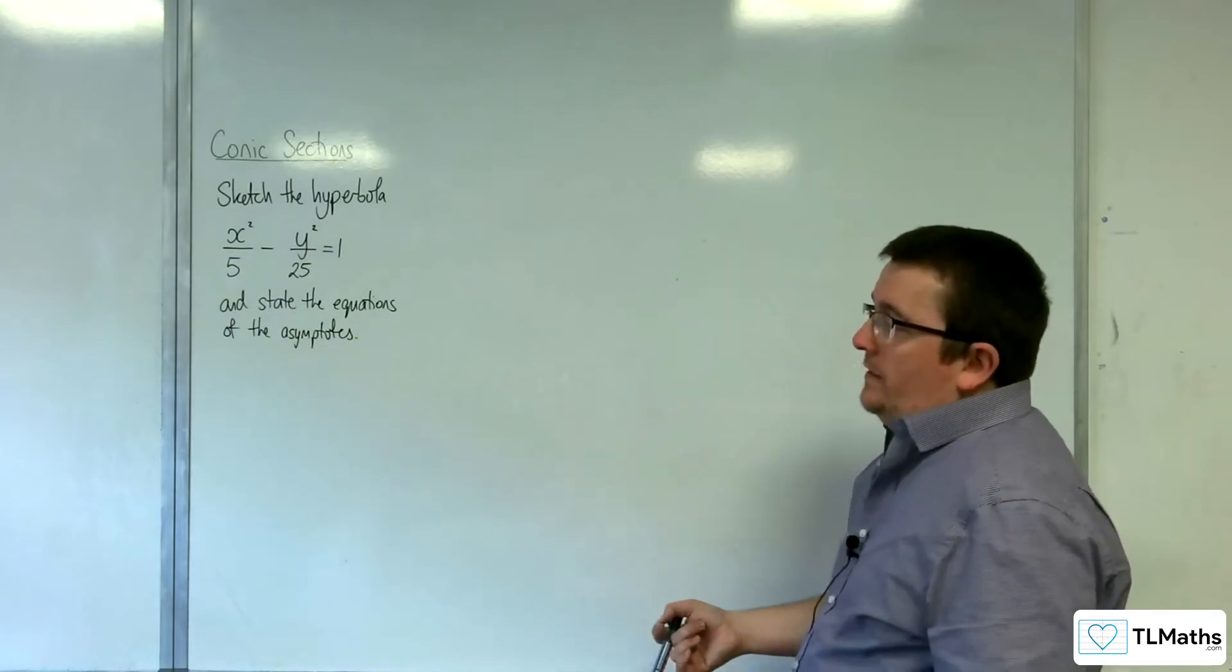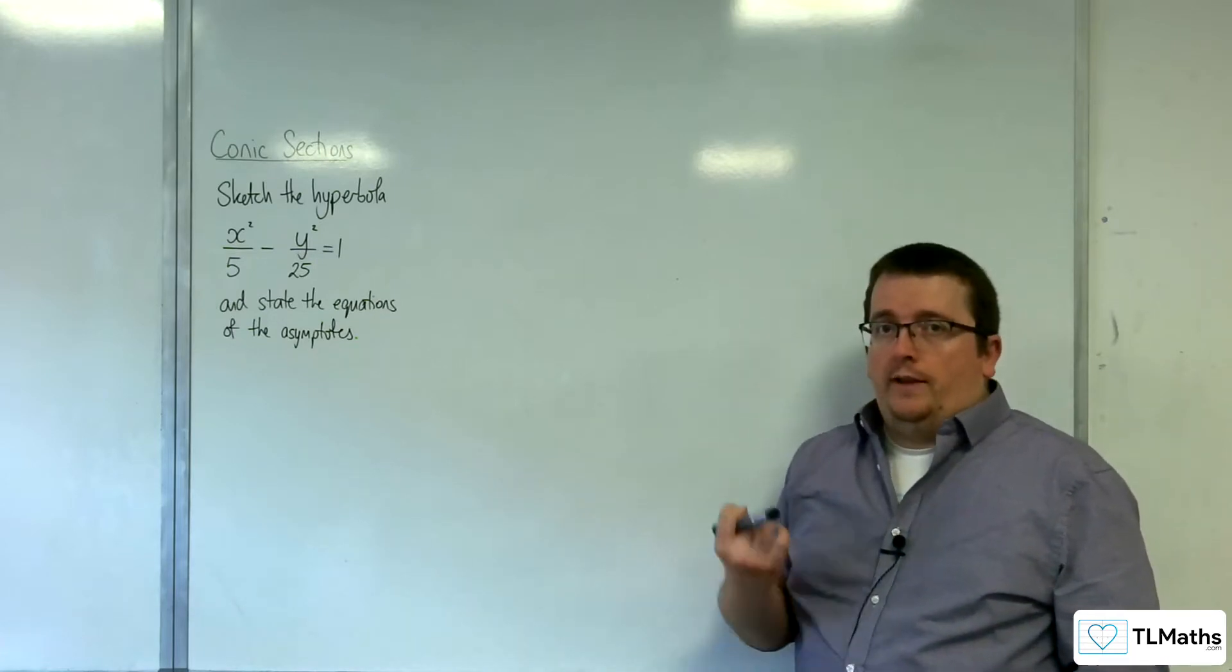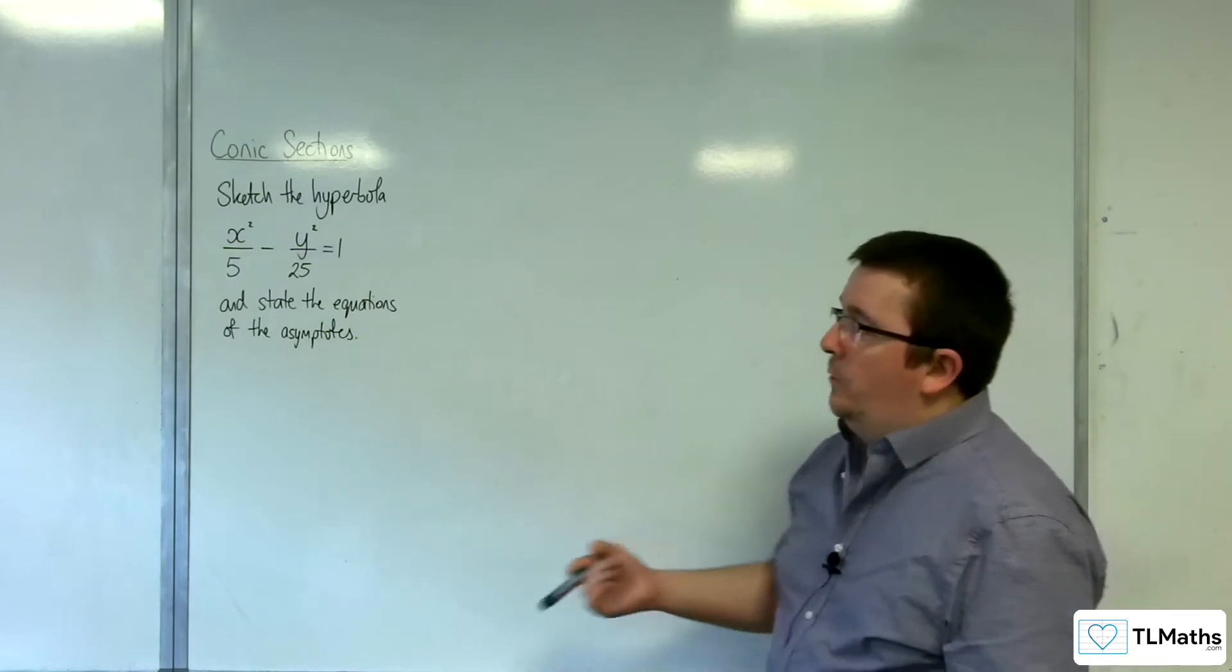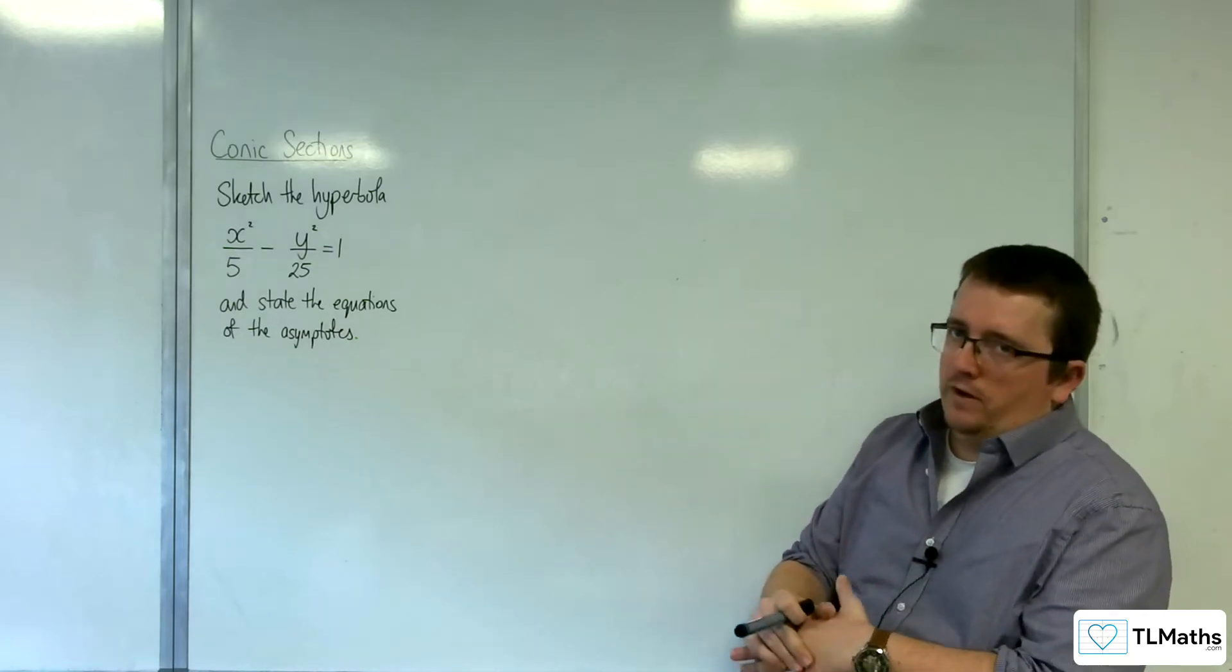Now, how you get to the asymptotes is really up to you. You can go about it from scratch, as I showed you a couple of videos ago, looking at when both x and y tend to infinity and deriving them that way.